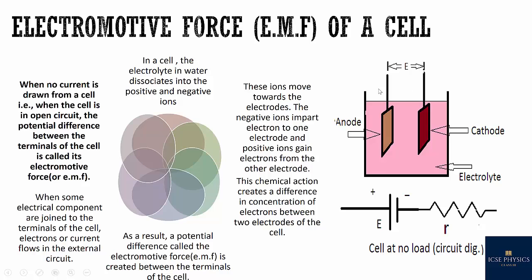As a result, a potential difference called electromotive force is created between the terminals of the cell. When no current is drawn from a cell — when the cell is in open circuit — the potential difference between the two terminals of a cell is called its EMF, or electromotive force.